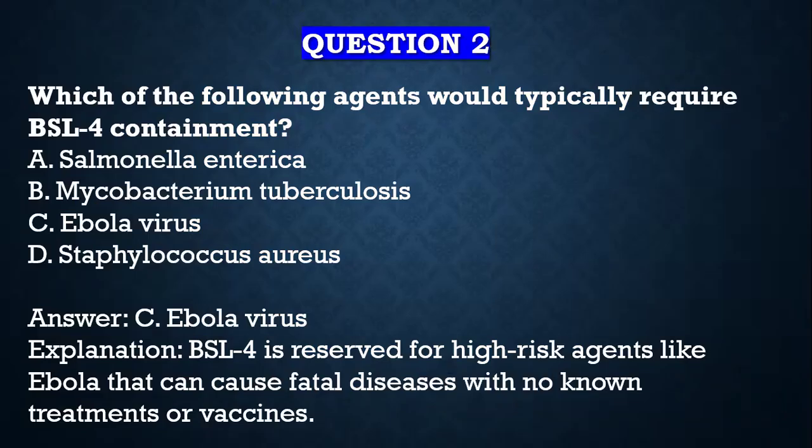Question number two: which of the following agents will typically require BSL4 containment? Remember that is the highest risk level. A) Salmonella enterica, B) Mycobacterium tuberculosis, C) Ebola virus, D) Staphylococcus aureus. If you're writing these please make them italicized. Your answer is C, Ebola virus, because BSL4 is reserved for high-risk agents like Ebola virus that can cause fatal diseases with no known treatment or vaccines.